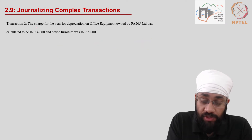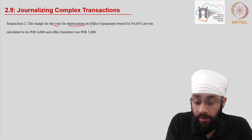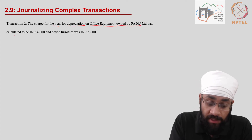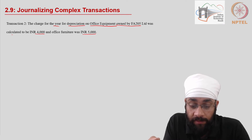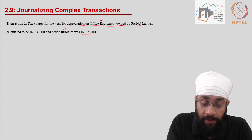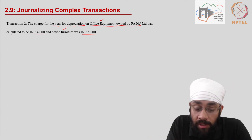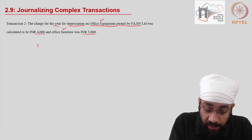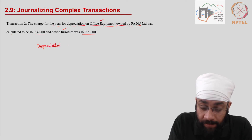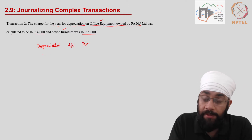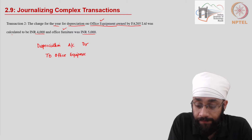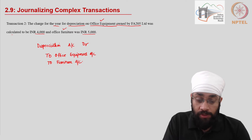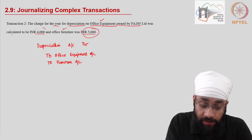The second transaction: the charge for the year for depreciation on office equipment owned by FA Limited was calculated to be 4,000, and on office furniture, 5,000. There are two asset items — office equipment and office furniture — and depreciation is being charged on both. The journal entry is: depreciation account debit, to office equipment account and to furniture account. The total depreciation being charged is 5,000 plus 4,000, which is 9,000.